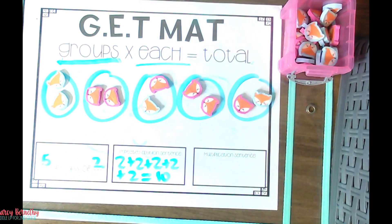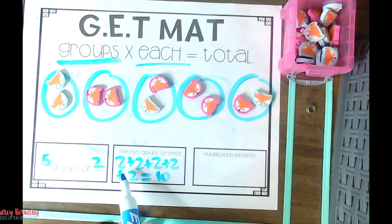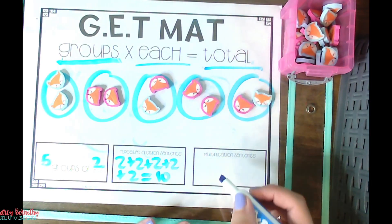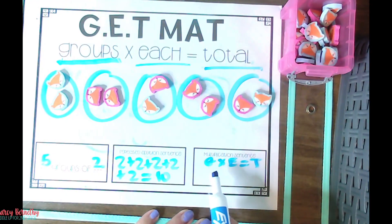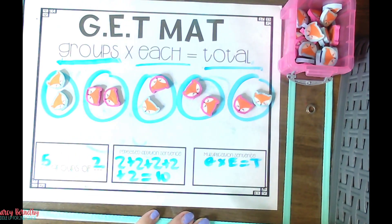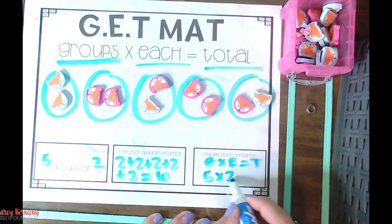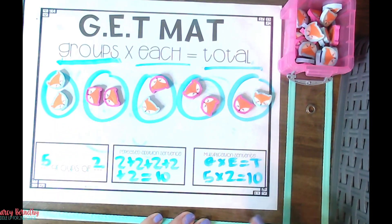We want to explain to our kids that the reason we simplify this into multiplication is because two plus two plus two plus two plus two becomes a mouthful, and it can get confusing especially when you start working with higher numbers. So now it's time to write our multiplication sentence. G times E equals T — groups times each equals total. How many groups did we draw? Five. How many in each? Two. Five times two equals ten, and we skip count to find our answer: two, four, six, eight, ten.